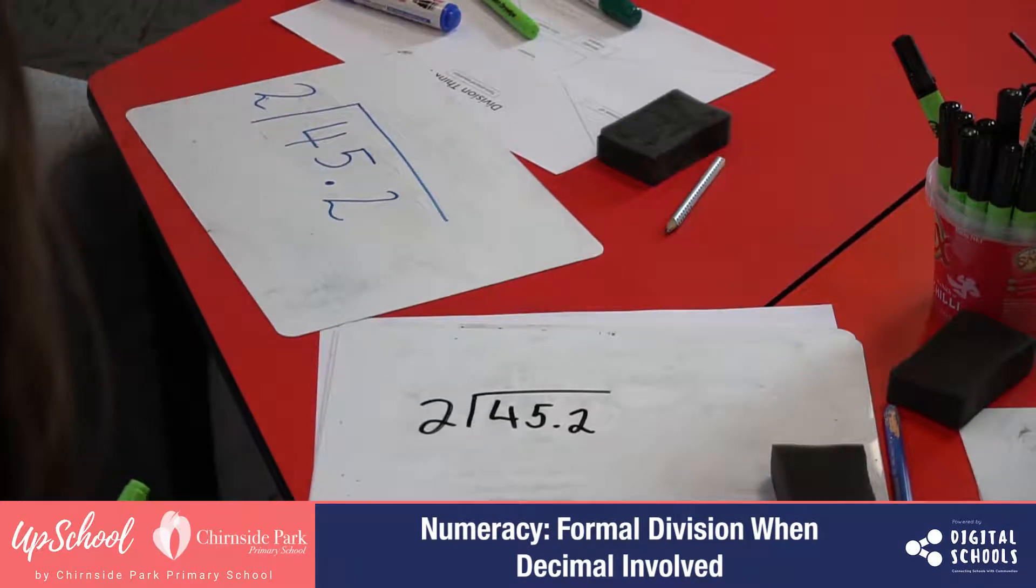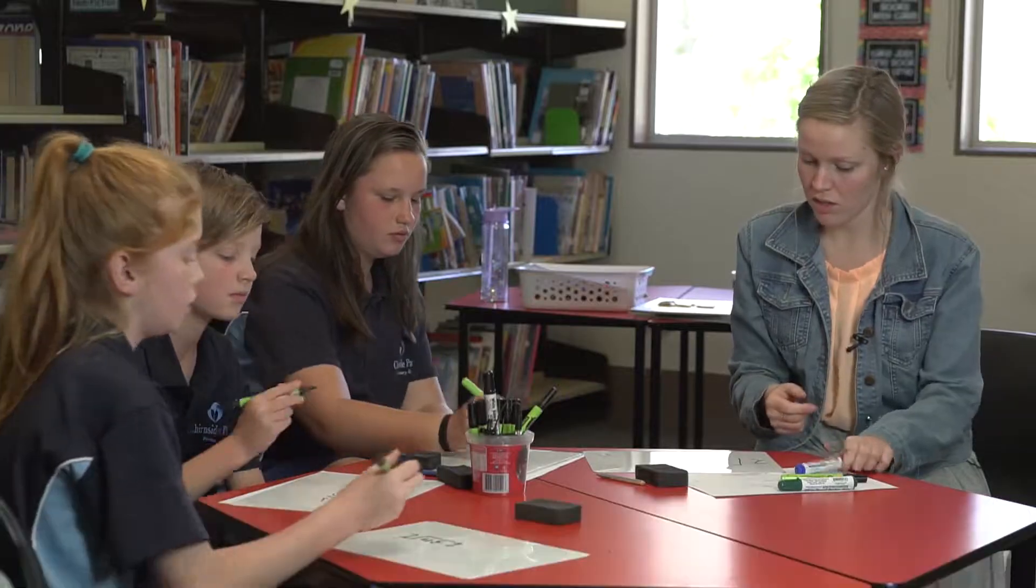So, we're asking ourselves four, how many twos? Two. Two. Right on top, beautiful, no remainders.